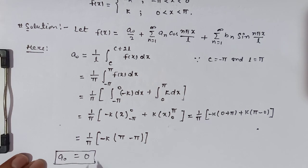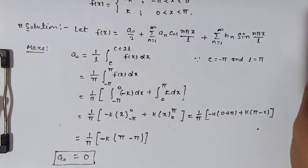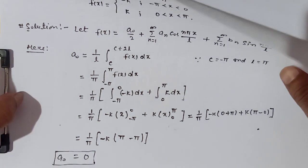So a₀ is equal to 0. We have calculated this. Now we find aₙ.